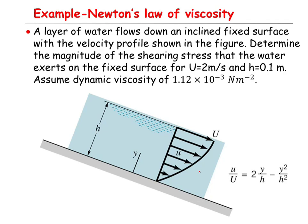Here is an example showing how to apply Newton's law of viscosity. The question states: as a layer of water flows down an inclined fixed surface with the velocity profile shown in the figure, determine the magnitude of the shearing stress that the water exerts on the fixed surface for U equal to 2 m/s, h equal to 0.1 m, and dynamic viscosity of 1.12 × 10⁻³ N/m².